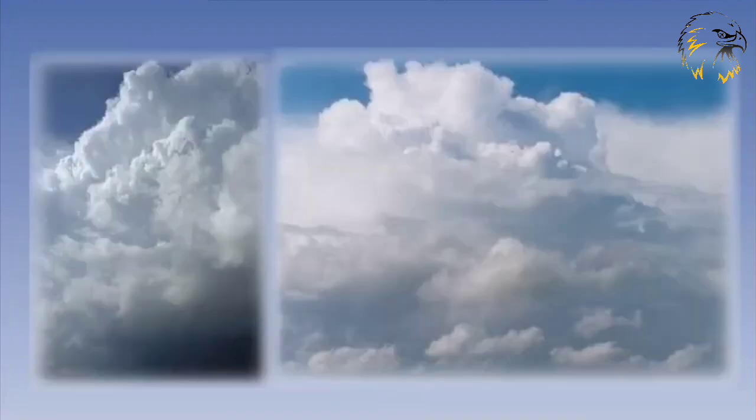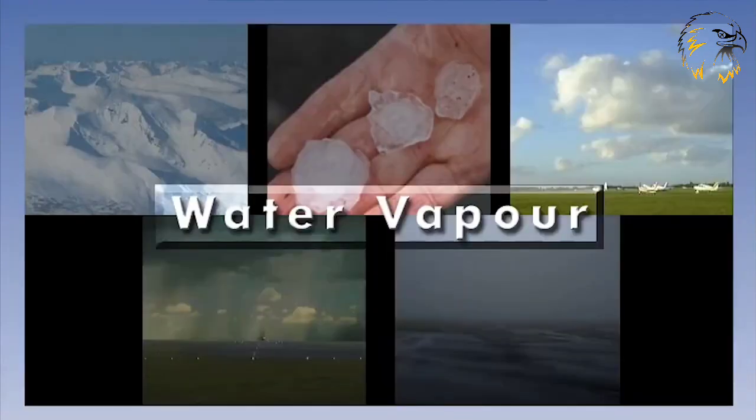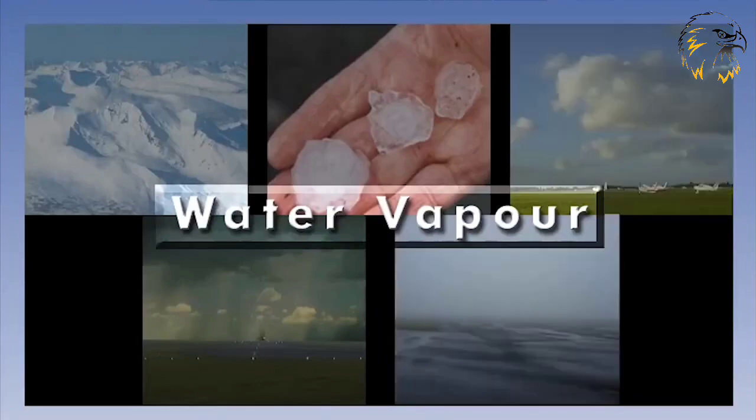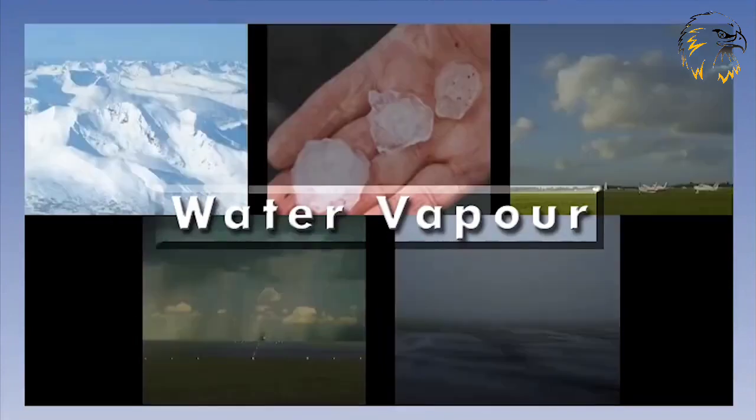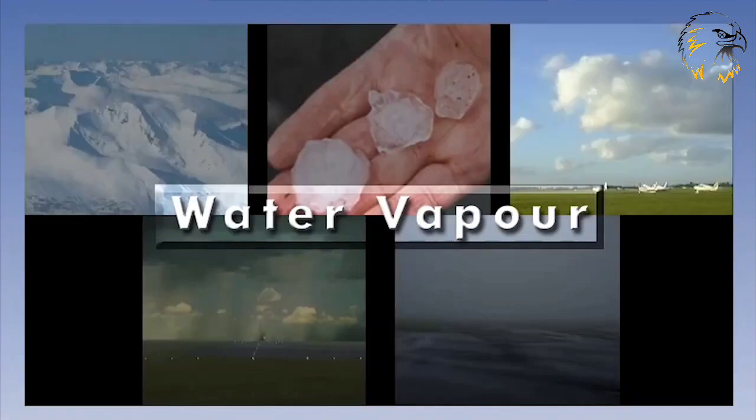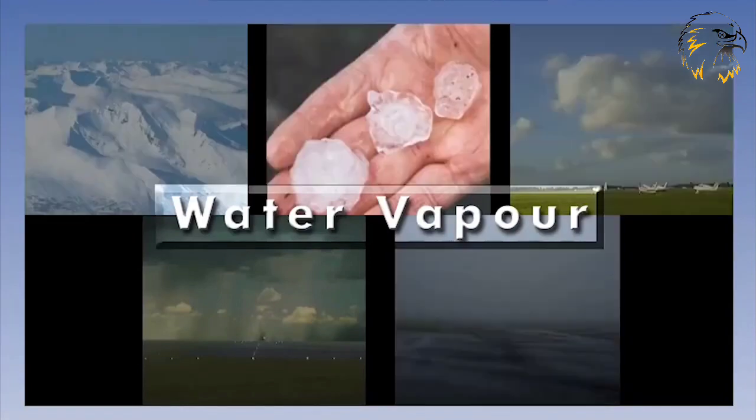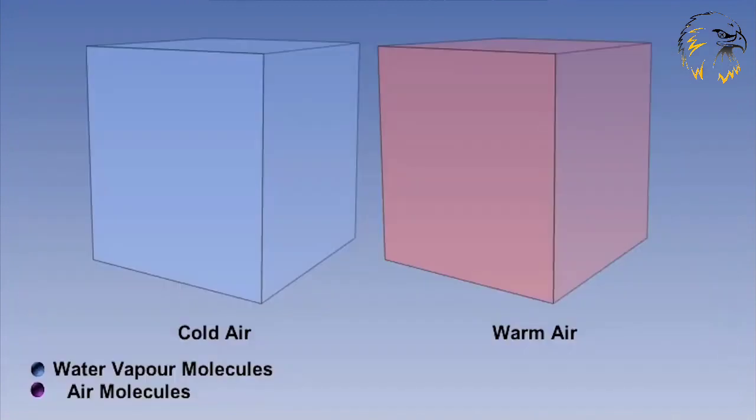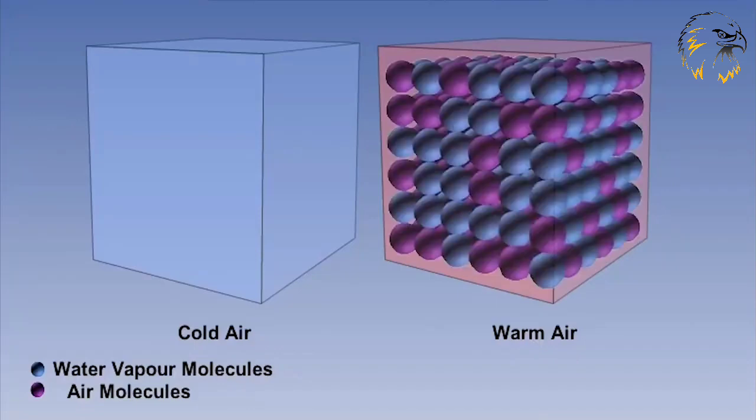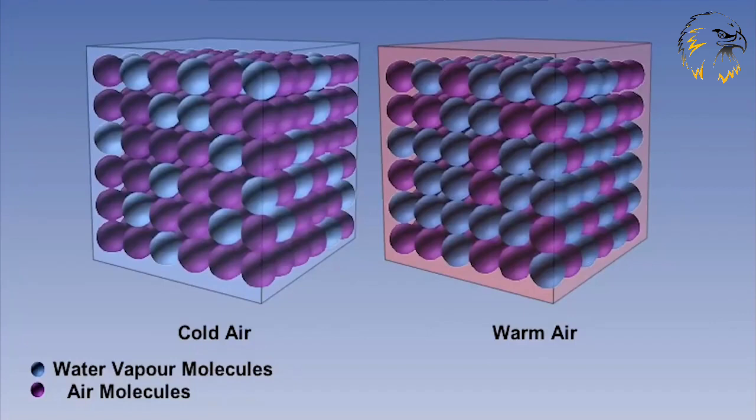Now let's think about the moisture content of our parcel of air, in the form of water vapor. The presence of water in the atmosphere complicates things significantly, and it's most important to understand the processes that are involved. Air can hold only a limited amount of moisture or water vapor before it reaches saturation. Warm air can hold more water vapor than cold air. This is due to the greater distance between air molecules in the warm air, creating more room for water vapor molecules.